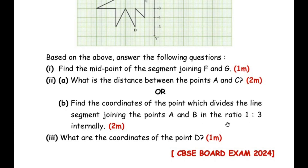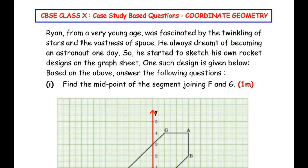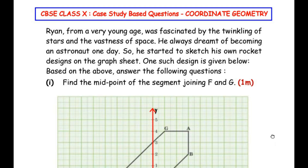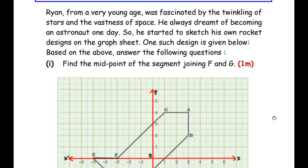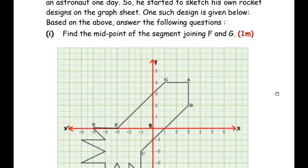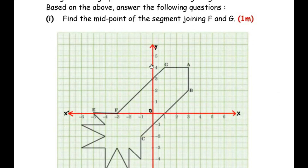Ryan, from a very young age, was fascinated by the twinkling of stars and the vastness of space. He always dreamt of becoming an astronaut one day, so he started to sketch his own rocket designs on a graph sheet. One such design is given below. Based on the above, answer the following questions. Find the midpoint of the segment joining F and G.